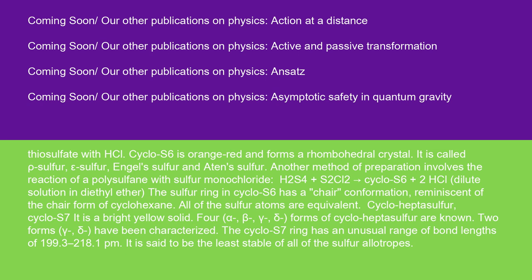Cycloheptasulfur, cyclo-S7: it is a bright yellow solid. Four forms — alpha′, beta′, gamma′, delta — of cycloheptasulfur are known; two forms, gamma′ and delta, have been characterized. The cyclo-S7 ring has an unusual range of bond lengths of 199.3 to 218.1 pm. It is said to be the least stable of all of the sulfur allotropes.